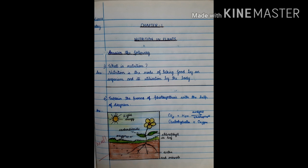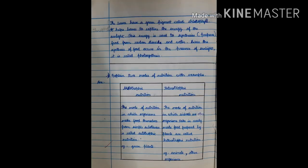Question number 2. Explain the process of photosynthesis with the help of a diagram. CO2 plus H2O gives carbon dioxide plus oxygen. The leaves have a green pigment called chlorophyll. Chlorophyll helps leaves to capture the energy of the sunlight. This energy is used to synthesize or prepare food from carbon dioxide and water. Since the synthesis of food occurs in the presence of sunlight, this is called photosynthesis.